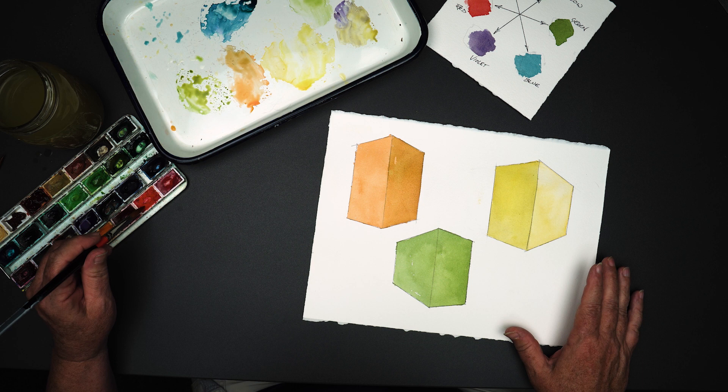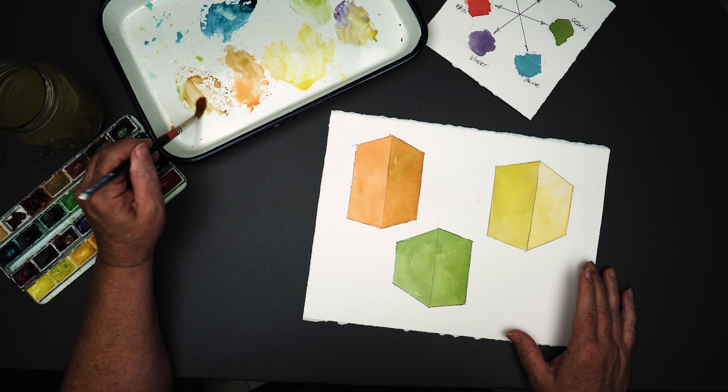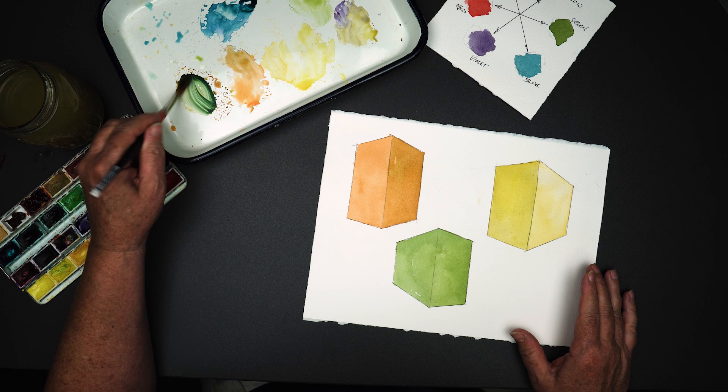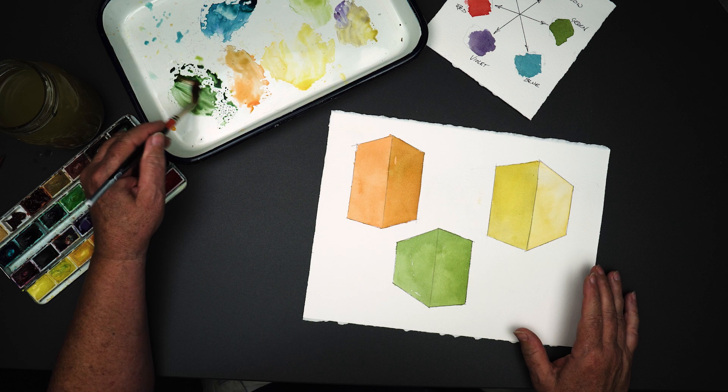So, I'm going to try this red and this green together. That makes brown. I think I need a lot more green. There we go. Now, add a little more red. And it darkens it right up.